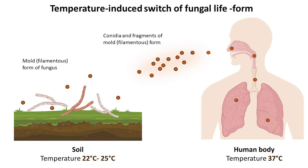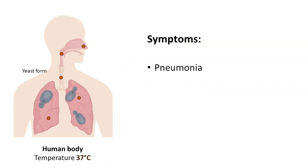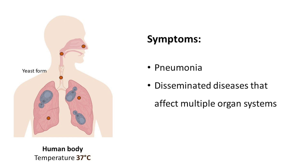Once inside the lung, these fungi transform into pathogenic yeasts, or in the case of Coccidioides species, into spherules containing endospores. Although infections sometimes remain asymptomatic, they can progress to cause symptoms such as pneumonia and disseminated diseases that affect multiple organ systems. The severity of the infection is influenced by the size of the inoculum and the strength of the host's immune system.